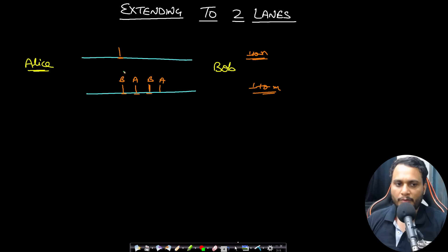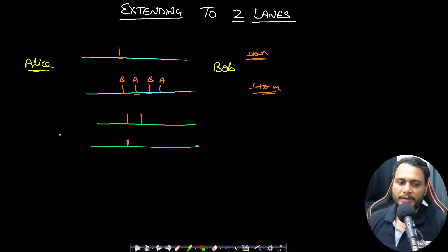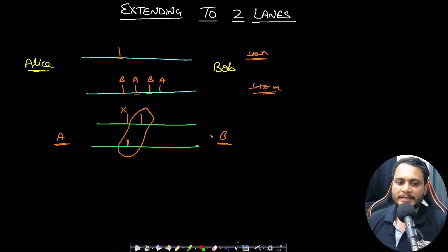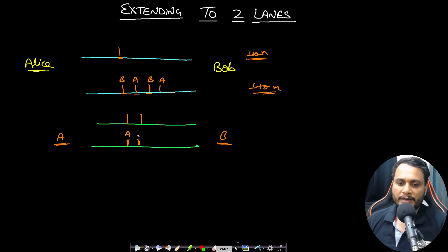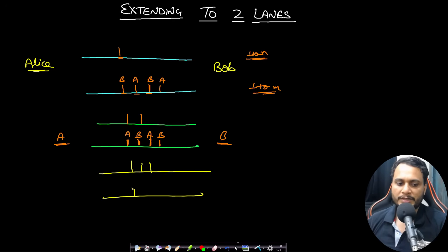With two flowers in the first lane and one flower in the second lane, Alice takes a flower and Bob is left with a one-one problem — whichever flower Bob takes, Alice attacks and wins. With two flowers in each lane, Bob wins. The pattern alternates as you increase flowers. With three flowers in the first lane: one flower in second → Bob wins, two flowers → Alice wins, three flowers → Bob wins, and so on — the alternating pattern continues.